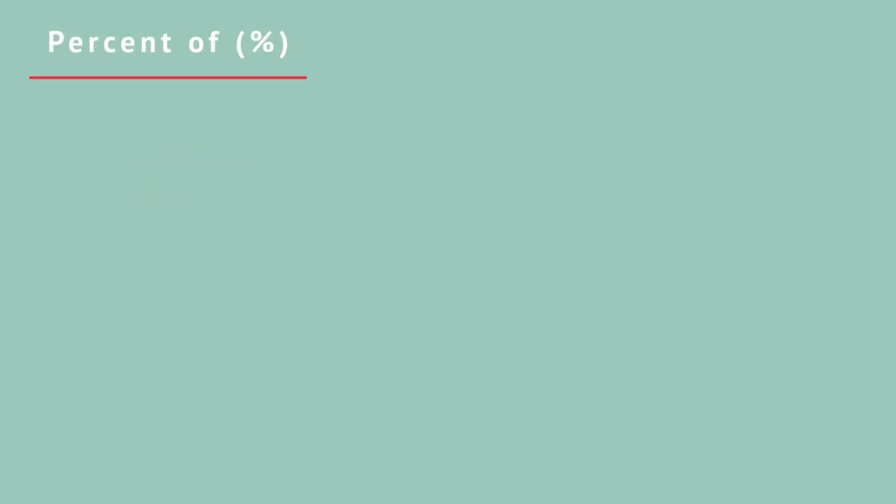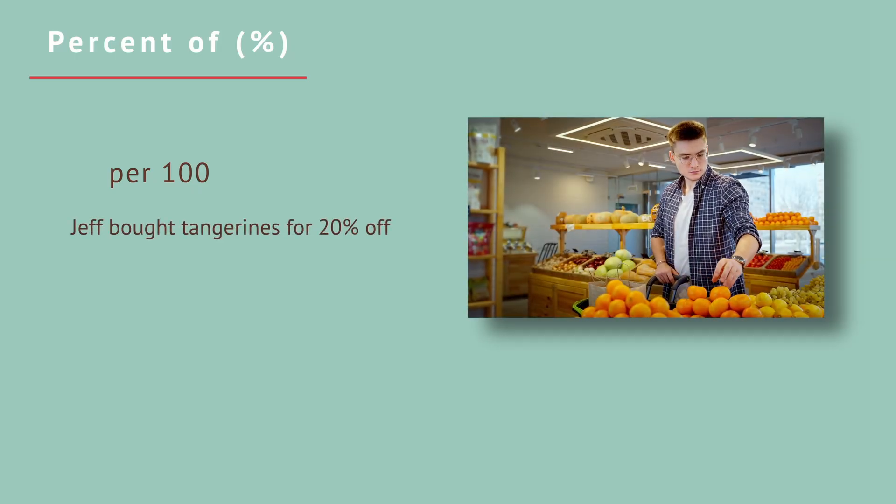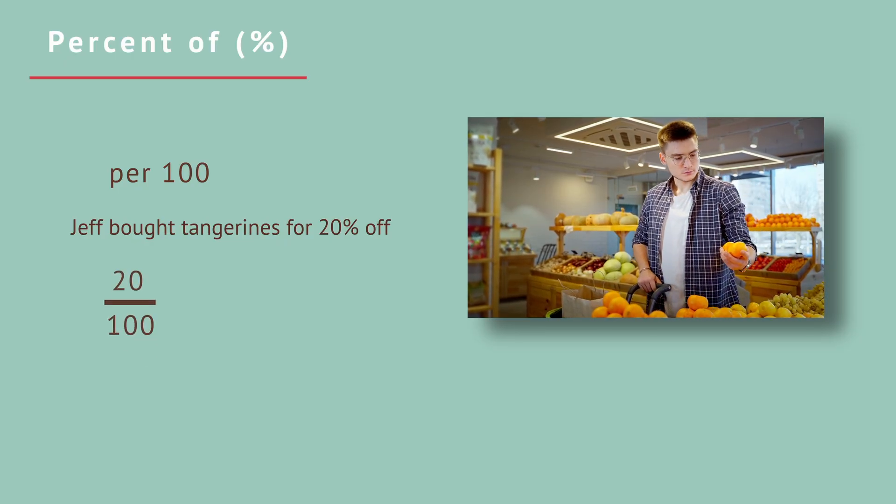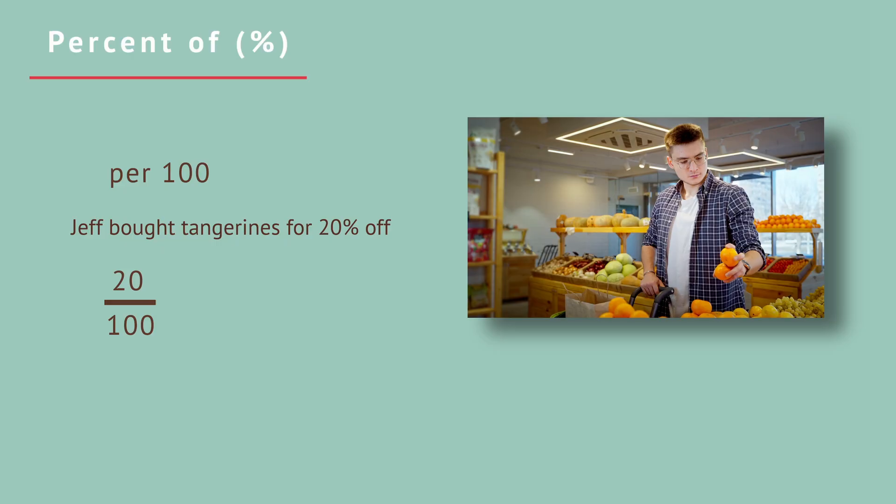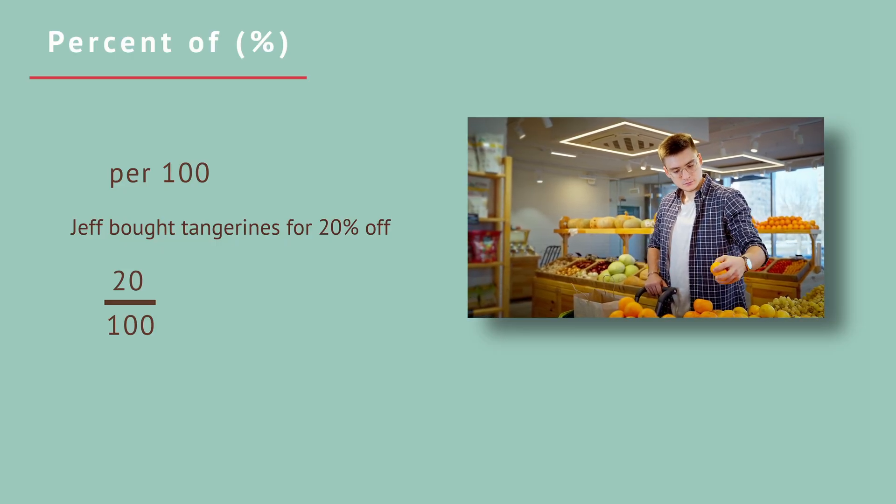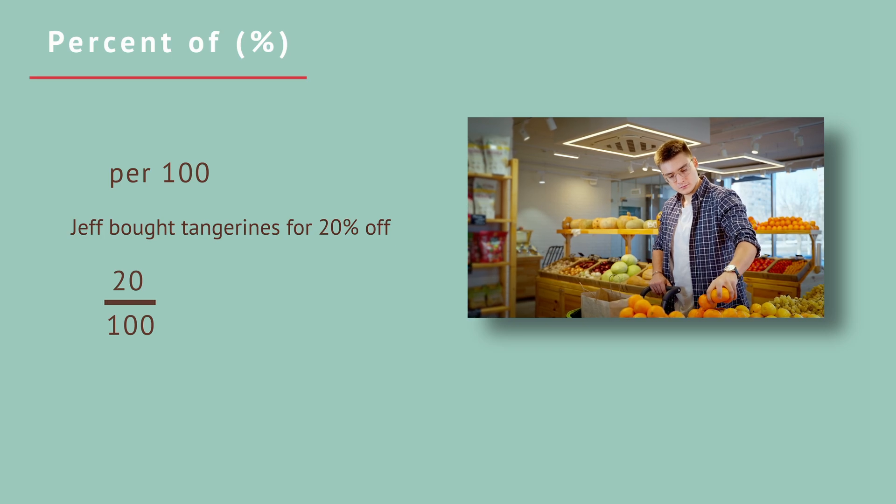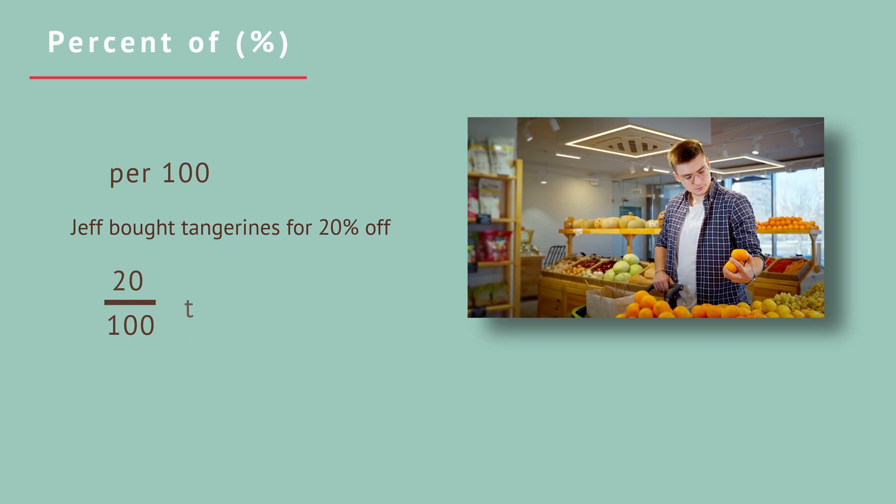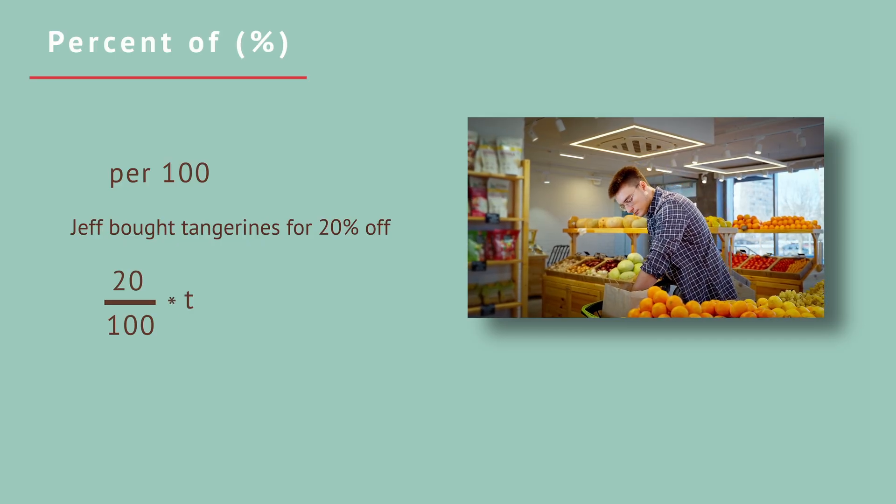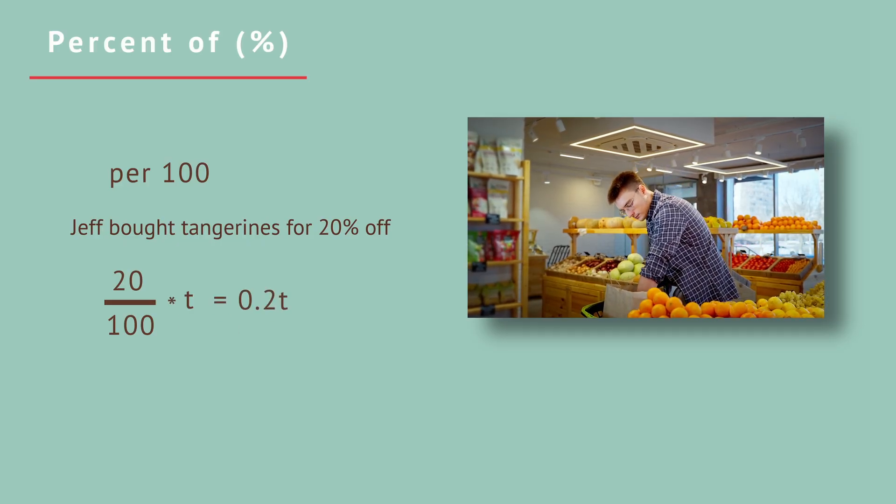Percent of. Did you know that percent means per 100? For example, if we read in a word problem that Jeff bought tangerines for 20% off, that means the discount was 20 out of 100, or 20 over 100. For every 100 pennies of the price, 20 of them are subtracted from the price. If the price is t, the discount is 20 over 100 times t, or 0.2 times t.